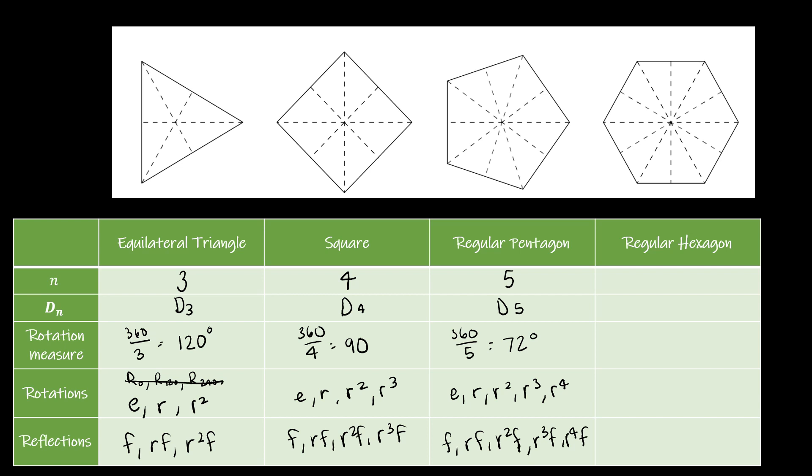And then, of course, a regular hexagon has six sides, D6. Rotation measure, 360 divided by six, which is 60. And we have E, R, R squared, R cubed, R to the fourth, R to the fifth. And then F, RF, R squared F, R cubed F, R to the fourth F, R to the fifth F.